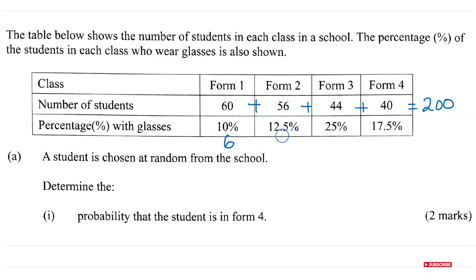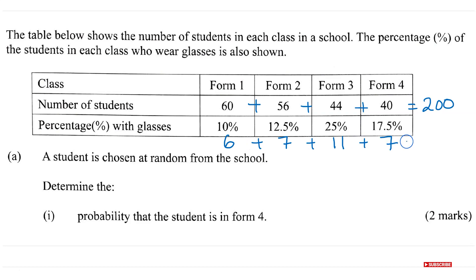For Form 2, 12.5% of 56 gives you 7. And over here, a quarter of them — half is 22, so you get 11 students. And over here, if you work it out, you will get 7 students. If you add all this up, you will get 31. So 31 students out of 200 are wearing glasses.